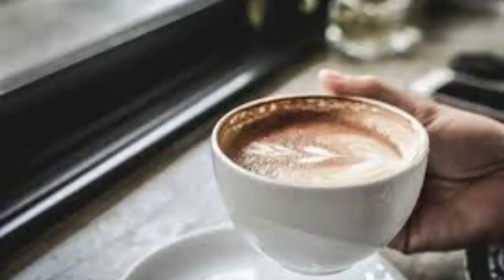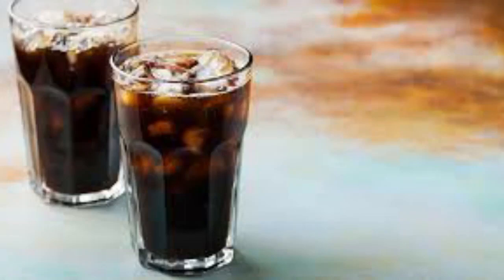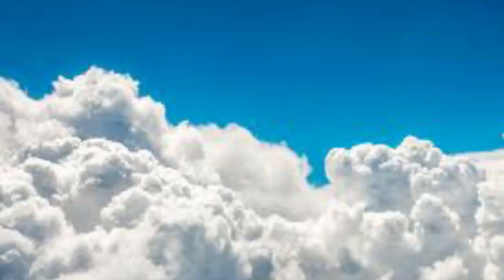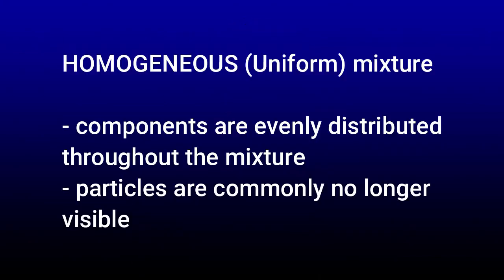Here are some examples of uniform mixtures: coffee drink, gelatine, soft drink, clouds, salt solution, and alcohol solution. For your notes, the definition of uniform or homogeneous mixture is: a type of mixture with components that are evenly distributed throughout the mixture. Commonly, the mixed particles are no longer visible or distinguishable.